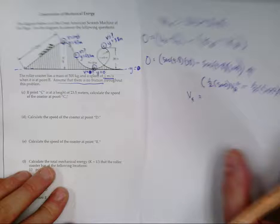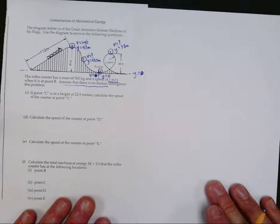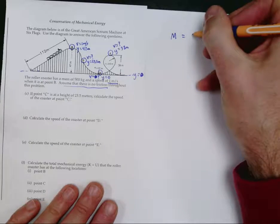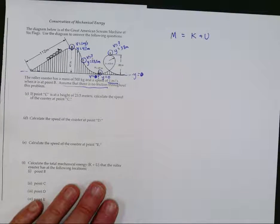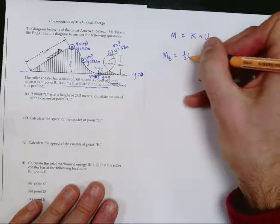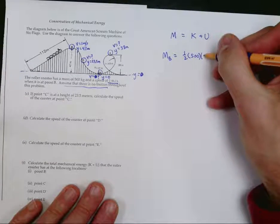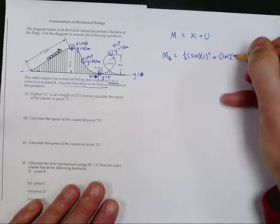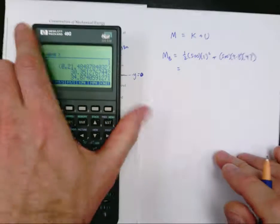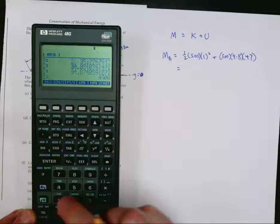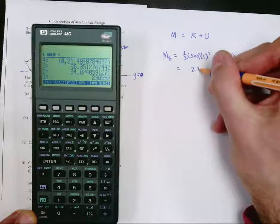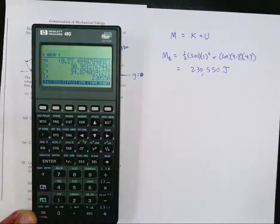The last question asks for the total mechanical energy at each location. Mechanical energy is simply kinetic plus potential. At B: one-half × 500 × 1² plus 500 × 9.8 × 47 equals 230,550 joules.